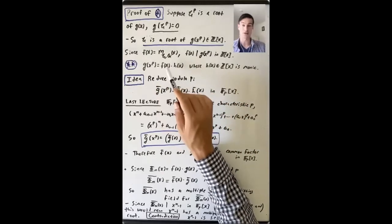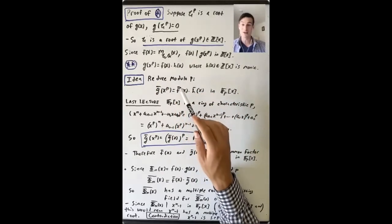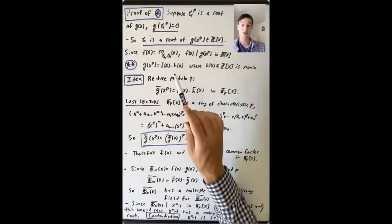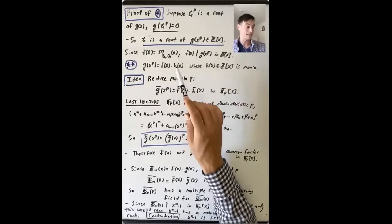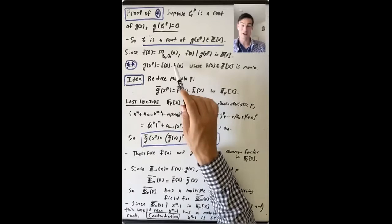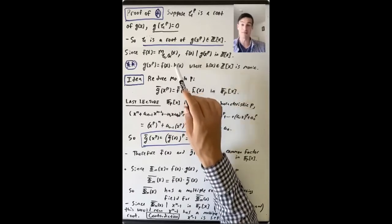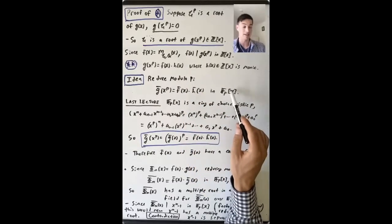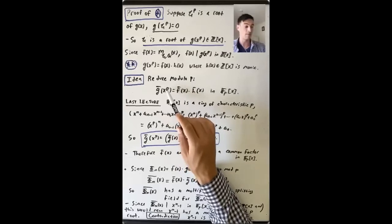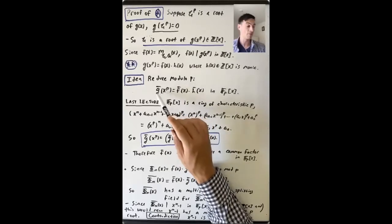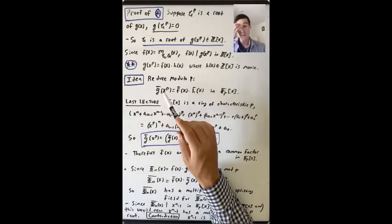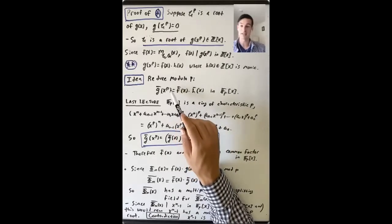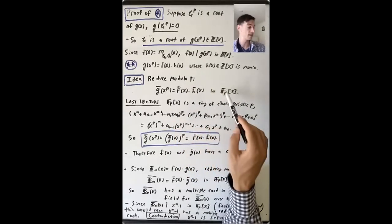This is where our contradiction is going to come from. There's another big idea: we're going to take this factorization and reduce all of the coefficients of these polynomials modulo p to get a factorization in F_p[x]. So g_bar(x^p) equals f_bar(x) times h_bar(x) in F_p[x].